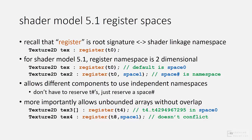The more important use for register spaces is that Shader Model 5.1 allows very large or even unbounded arrays to be declared. For example, tex3 is an unbounded size array whose beginning is bind slot t4. That uses up t4 through t_uint_max in space 0 — pretty much all the space. If you want to declare more resources, like additional arrays, you've only got t0 to t3 remaining. So using space 1, t8 declared with space 1 doesn't conflict with t8 in space 0.